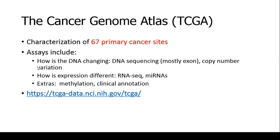The assays in TCGA include DNA sequencing — mostly exonic — and copy number variations, to see how DNA is changing. Then RNA sequencing and micro RNA sequencing show how expression differs. Micro RNA is a non-coding element that regulates gene expression. Additionally, methylome sequencing detects methylation and acetylation, and clinical annotation is available for each patient. There are almost 30,000 cancer patient genomes available with all this information across all 22,000 genes in one genome.